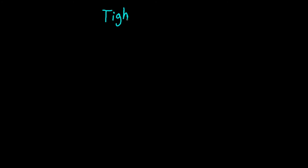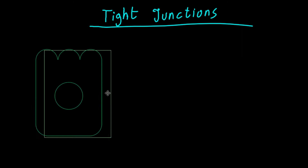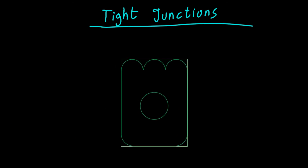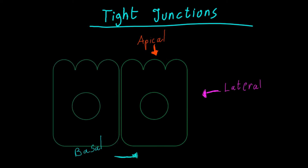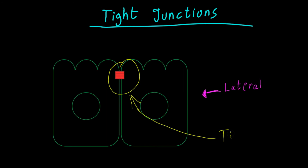In this presentation I'm going to talk about tight junctions: what they are, what they are made of, and what their functions are in the context of epithelial cells. Epithelial cells are usually polarized, which means they have different sides, and each side has different characteristics and different composition of lipids and proteins. There is an apical side, the lateral sides, and the basal side. Tight junctions are located on the lateral side of epithelial cells, close to the apical side.